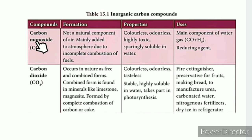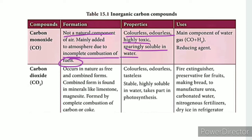Carbon monoxide is an inorganic carbon compound. It is a production compound and the main component of water gas. We use carbon monoxide to reduce metals and to remove metals in metallurgy.